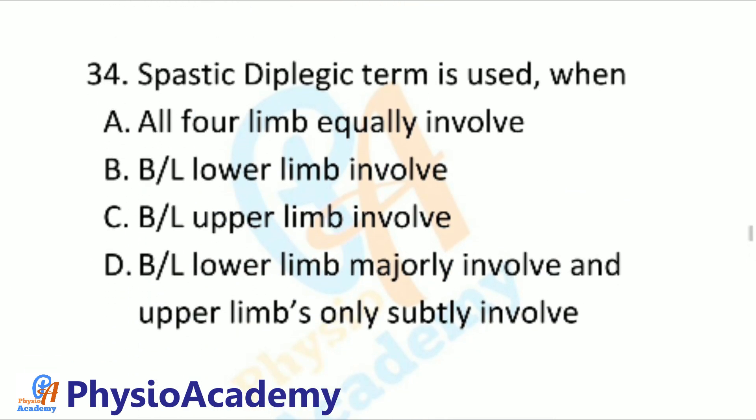Question number 34: The term 'spastic diplegia' is used when: Option A: All four limbs are equally involved. Option B: Bilateral lower limbs are involved. Option C: Bilateral upper limbs are involved. Option D: Bilateral lower limbs are majorly involved and upper limbs are only subtly involved.